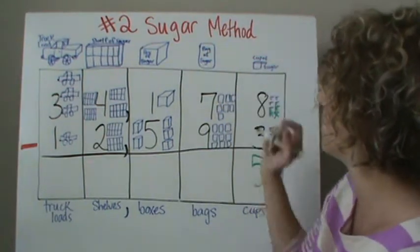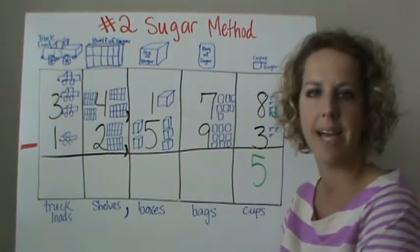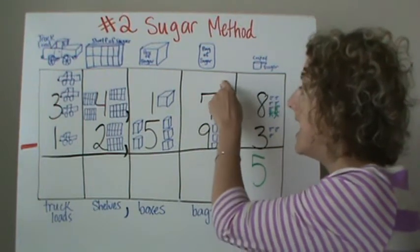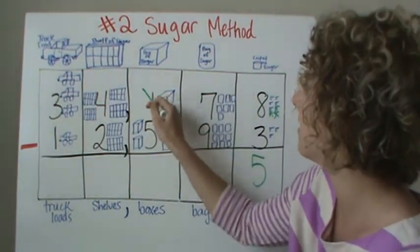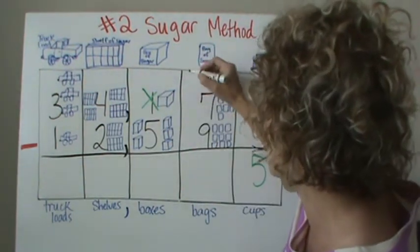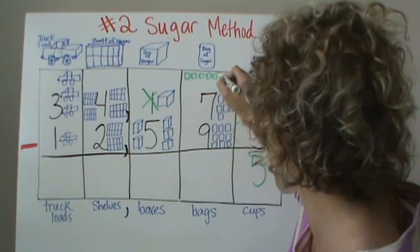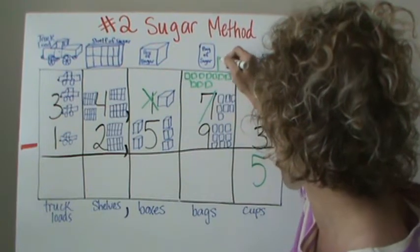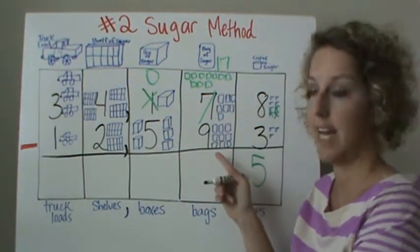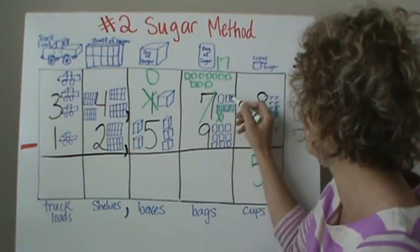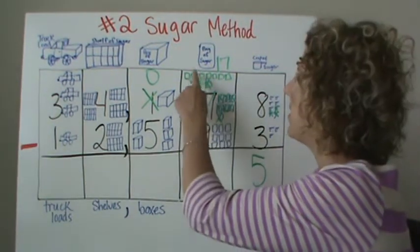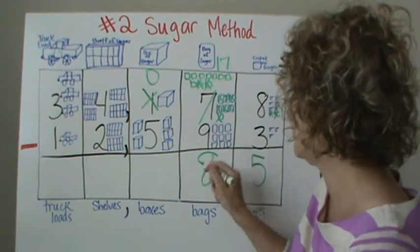Now, we're looking at the tens place. Seven minus nine: that's all we have in our cabinet — seven bags — and we need nine bags. We do not have enough, so we've got to go ahead and take one from the hundreds place, from the boxes. We're going to take the box and split it up into ten bags. Now that becomes seventeen bags in the tens place, and the hundreds becomes zero. Seventeen bags minus nine bags: take away nine, and that leaves us with eight. Seventeen minus nine is indeed eight.